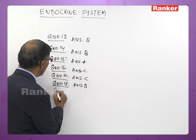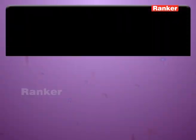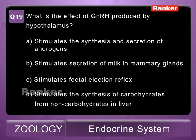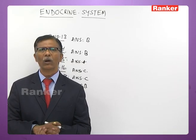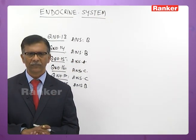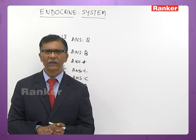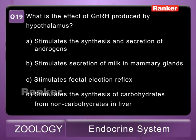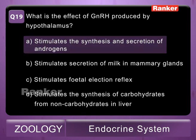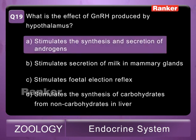Nineteenth question: what is the effect of GnRH produced by the hypothalamus? GnRH stands for gonadotropin releasing hormone. Options: A - stimulate synthesis and secretion of androgens; B - stimulate secretion of milk in mammary glands; C - stimulate fetal ejection reflex; D - stimulate synthesis of carbohydrates from non-carbohydrates in liver. GnRH secreted by the hypothalamus stimulates ovary and testis to secrete estrogens and androgens respectively. The correct answer is A.